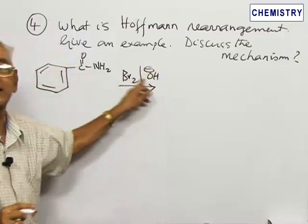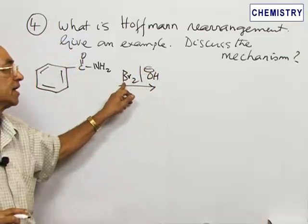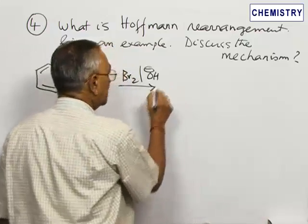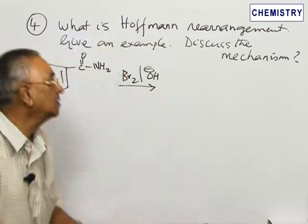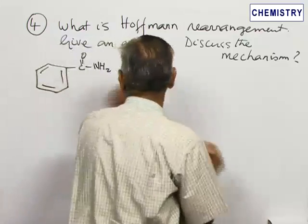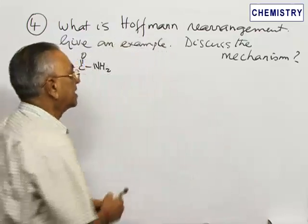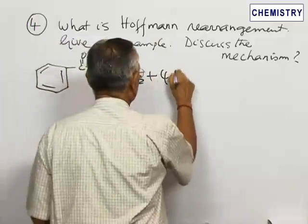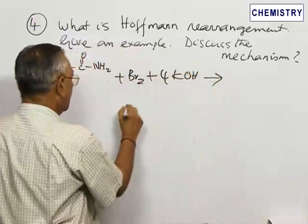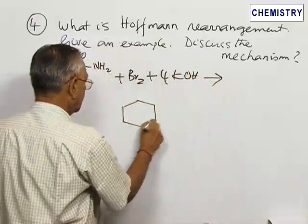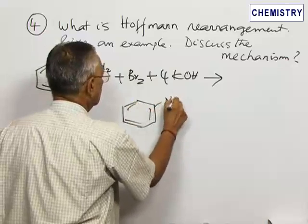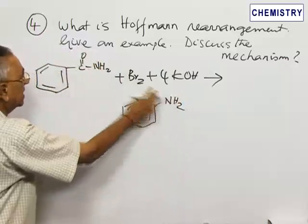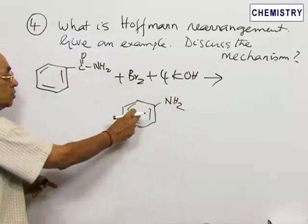It can be in the presence of sodium hydroxide or potassium hydroxide. It reacts with bromine in the presence of potassium hydroxide, and actually it can be given in the form of a regular equation. Then we will start explaining the mechanism of this reaction. This will give rise to an amine. We start with one extra carbon — that one carbon is lost in the process. The amine gets directly attached to the phenyl ring.